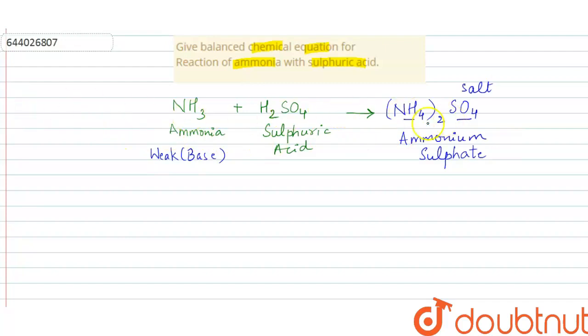This reaction can be balanced by adding 2 here. So two nitrogen atoms on the left, two on the right. Three twos are six, plus two, eight hydrogen atoms on the left, eight hydrogen atoms on the right. So now this equation is balanced.